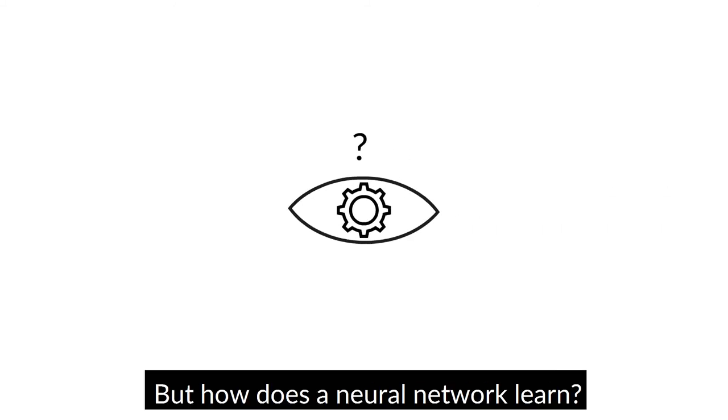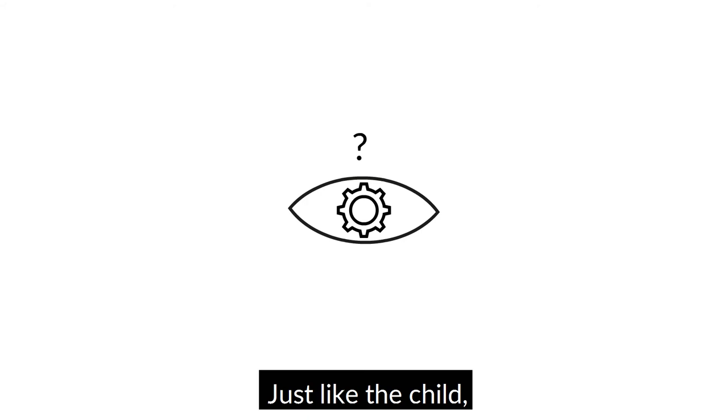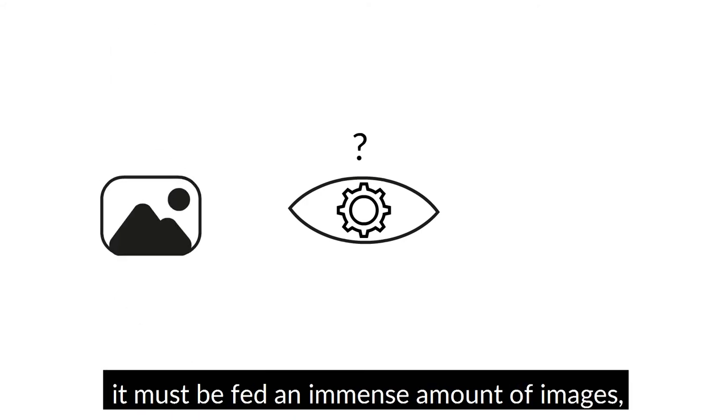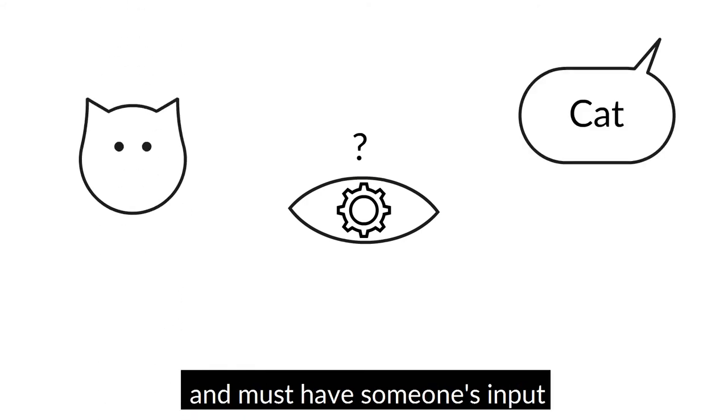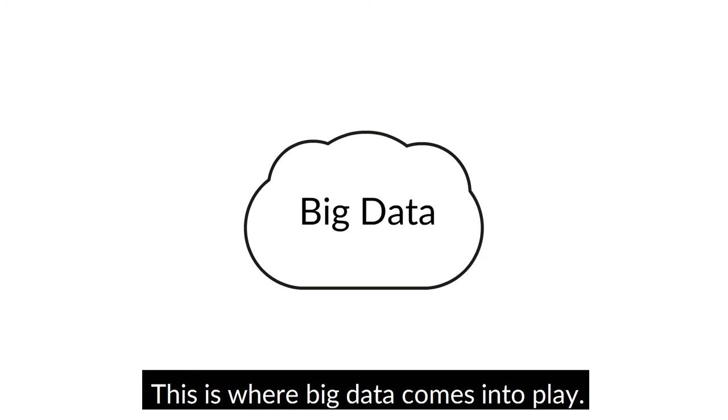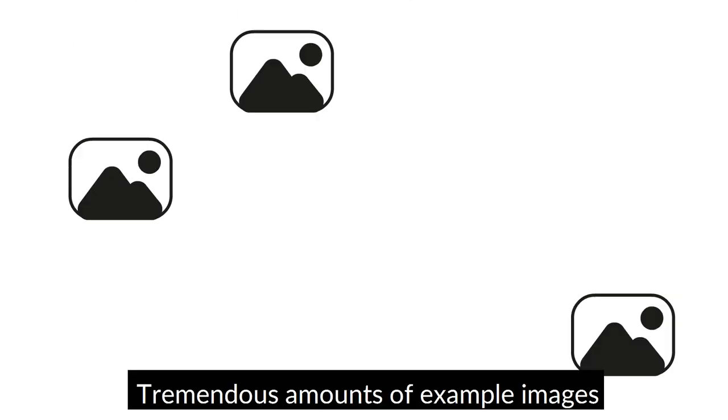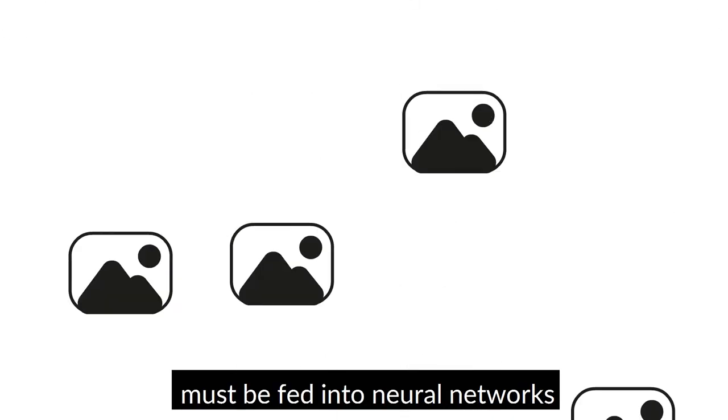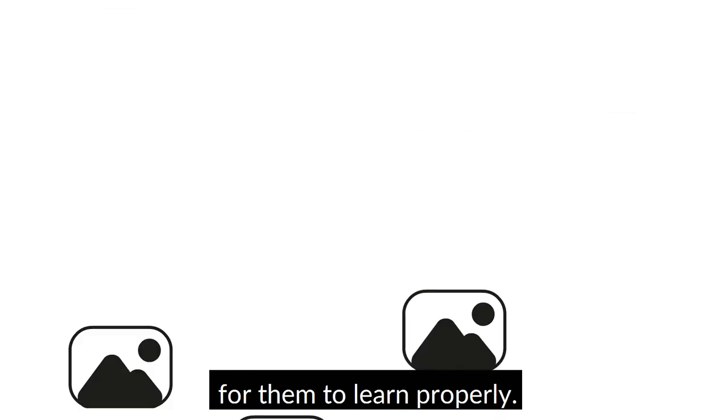But how does a neural network learn? Just like the child, it must be fed an immense amount of images, and must have someone's input to tell it which object is which in its field of view. This is where big data comes into play. Tremendous amounts of example images must be fed into neural networks for them to learn properly.